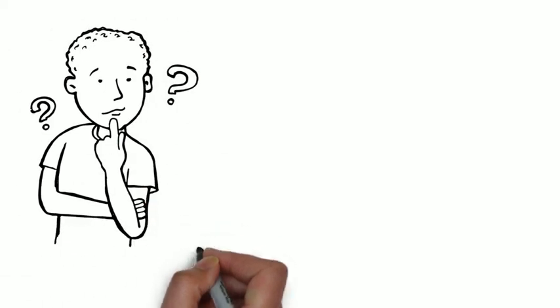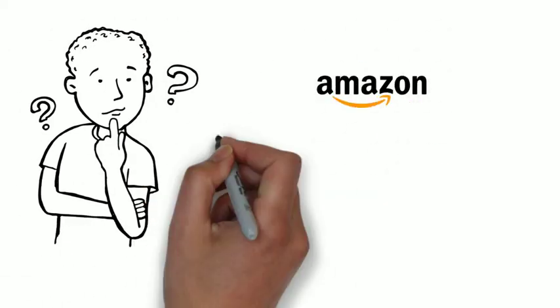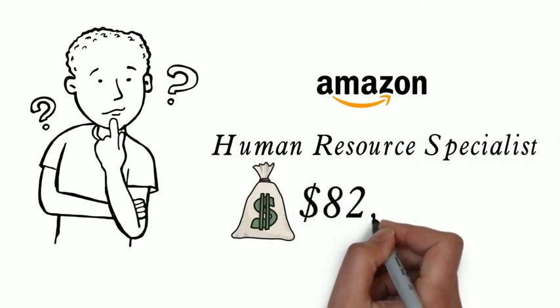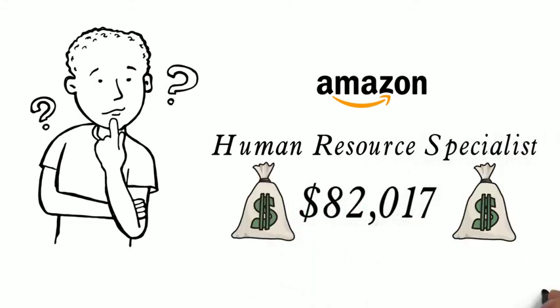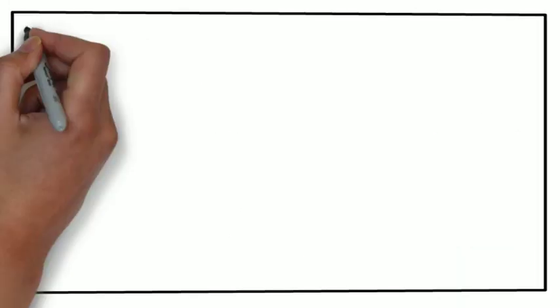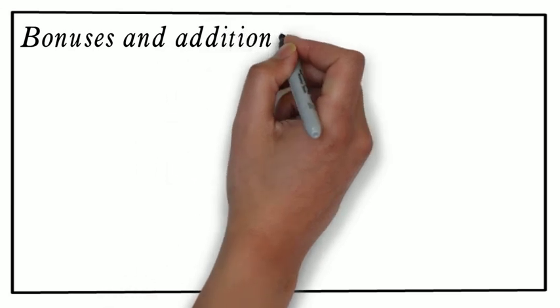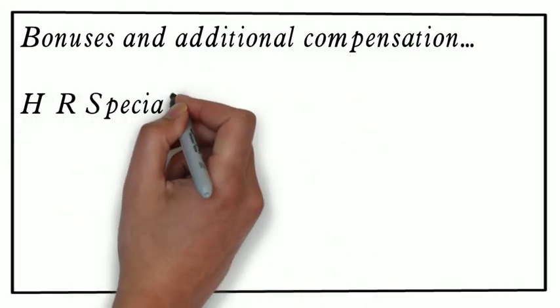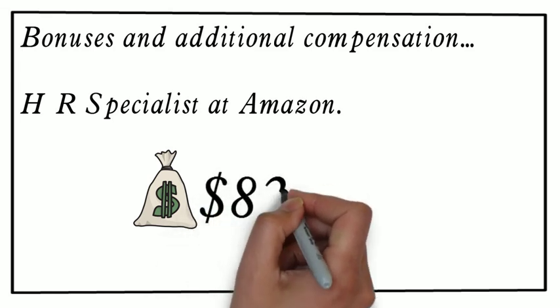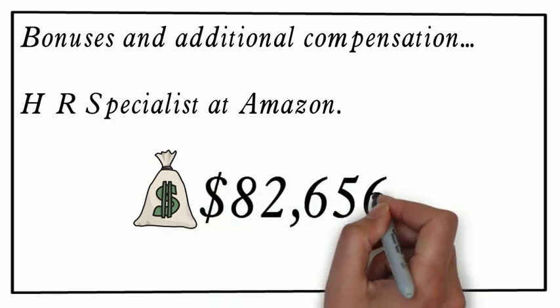Have you ever noticed how much today's big companies like Amazon pay special attention to Human Resource Specialist? The typical Amazon HR Specialist salary is $82,017. When factoring in bonuses and additional compensation, a HR Specialist at Amazon can expect to make an average total pay of $82,656.